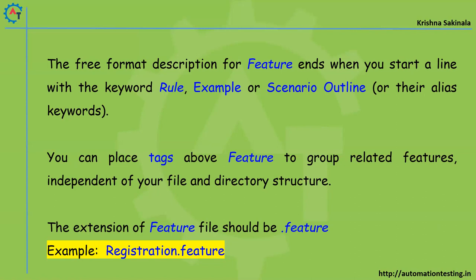You can place tags above a feature to group related features. So if you have a number of features, you can apply tags to indicate that a feature belongs to a smoke test, sanity test, or regression test, and so on — independent of your file and directory structure.